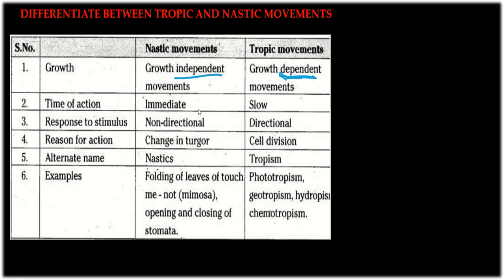In nastic movements as compared to tropic movements: tropic movements are slow and unidirectional, whereas nastic movements are non-directional and involve a change in turgor pressure.